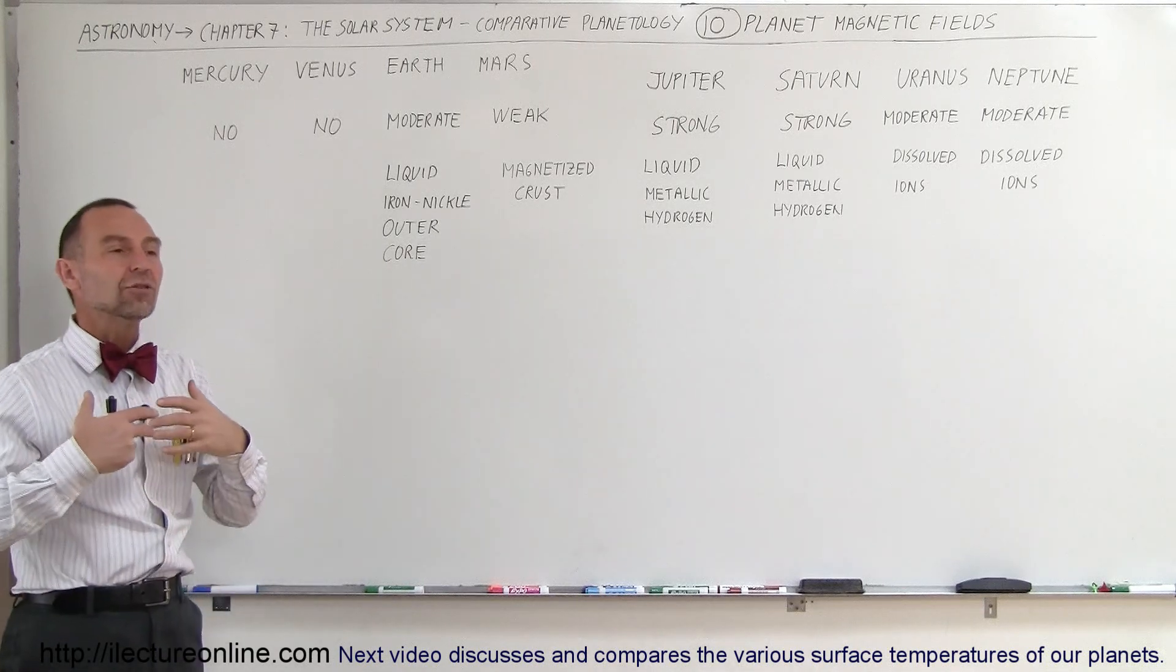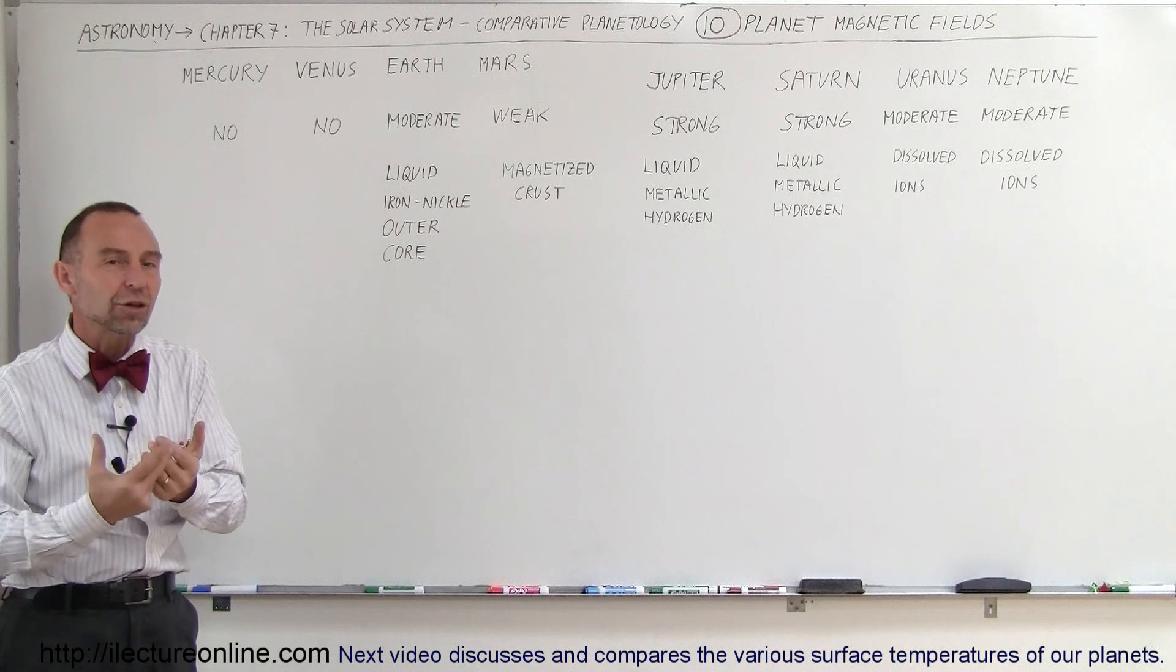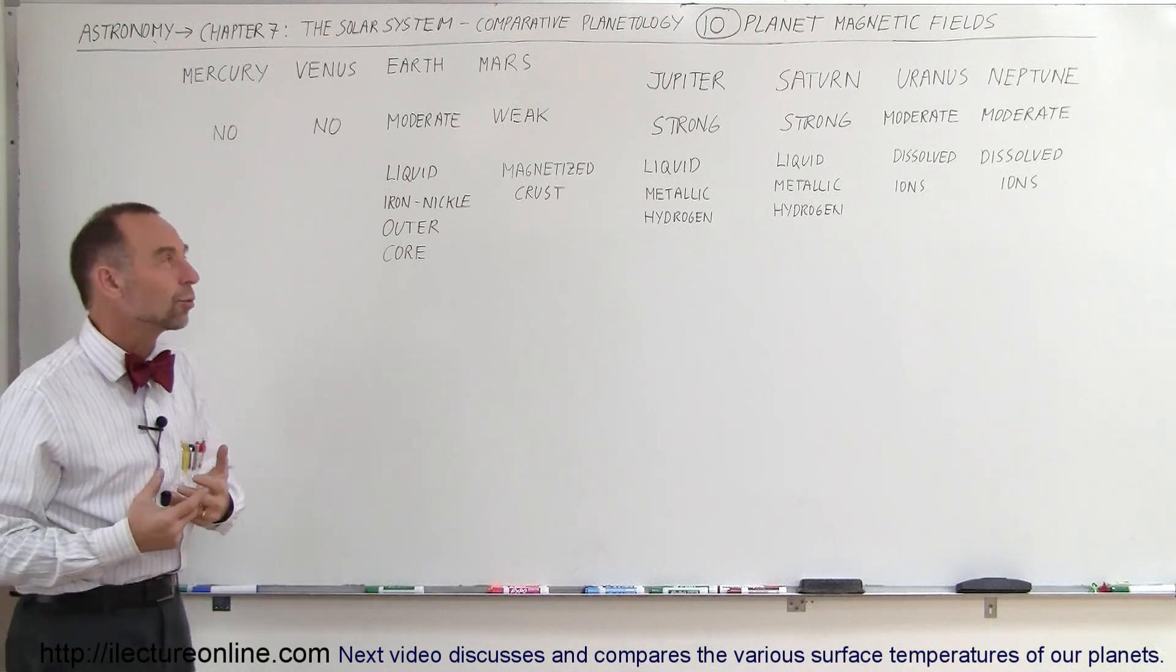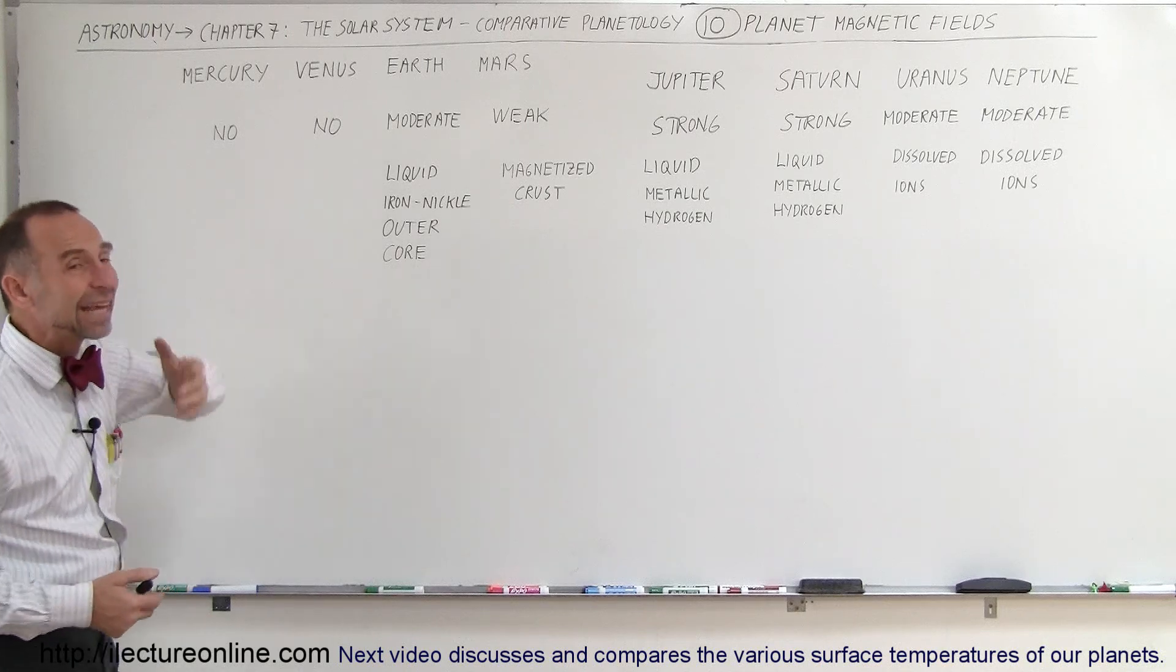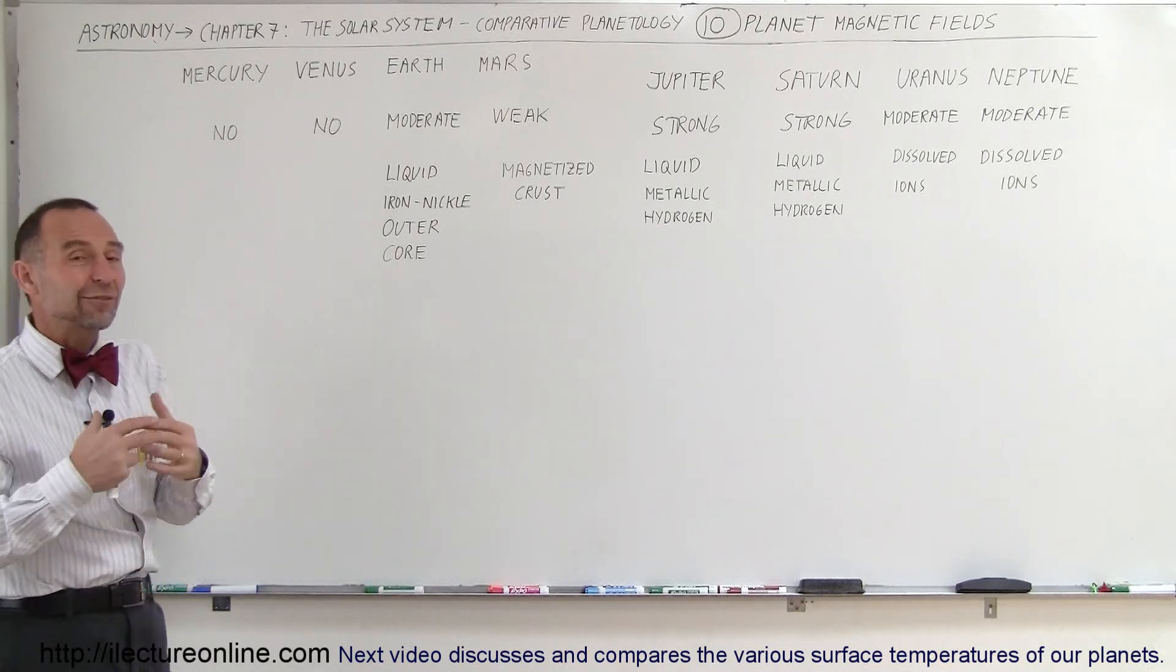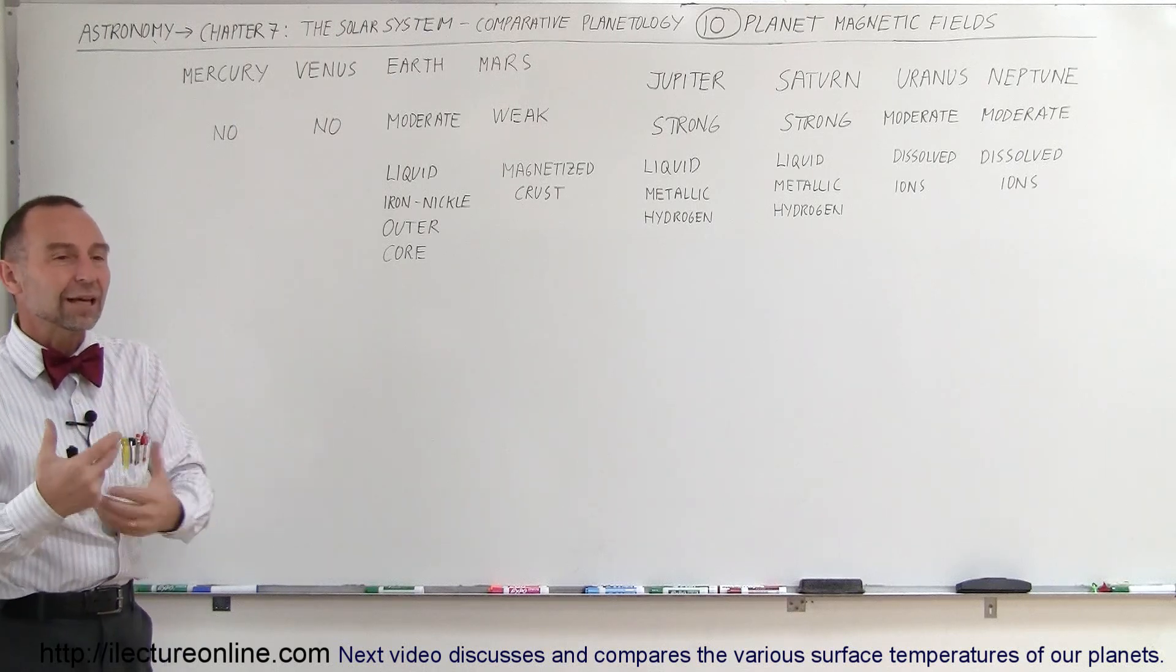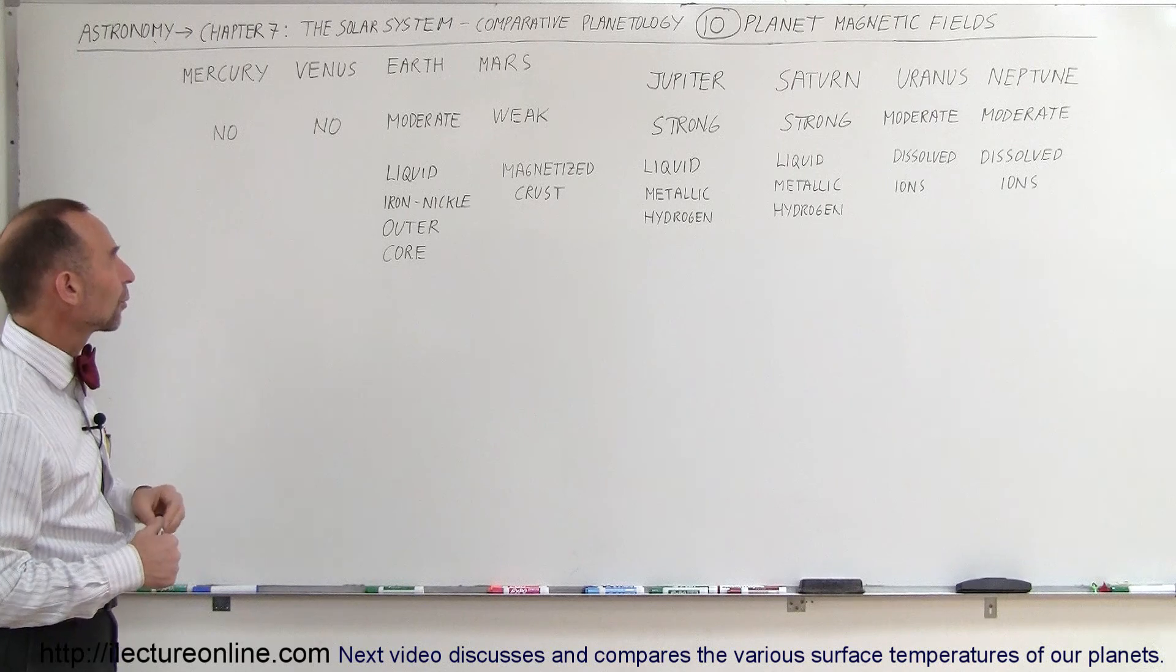So that rotational motion to aid in having a magnetic field simply isn't there for Mercury and Venus. On top of that, you need something like a liquid metal or something like that that could flow throughout the interior to cause those electric currents to exist. That doesn't seem to be the case for both Mercury and Venus. Therefore, we don't believe that there is that liquid metal flowing inside the interiors of Mercury and Venus.